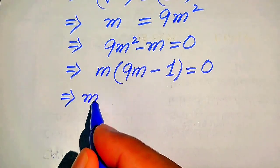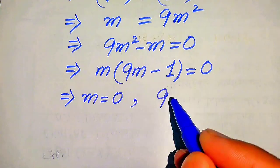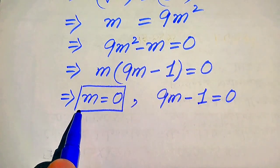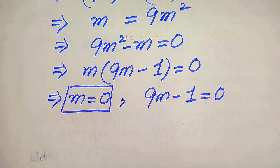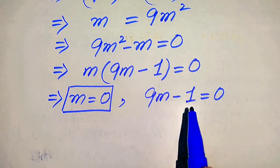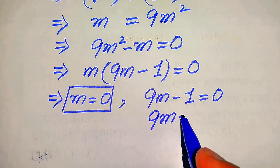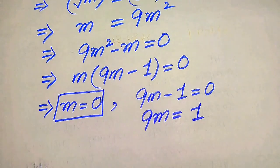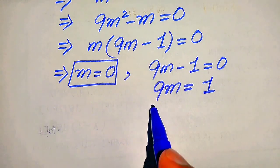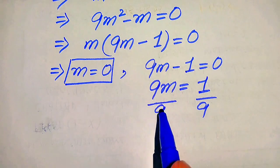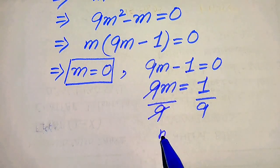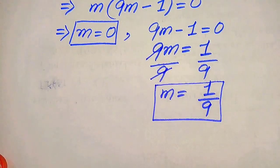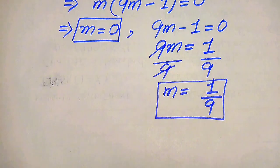We divide this into two cases. The first case gives m equals 0. The second case is 9m minus 1 equals 0. From the second case, moving minus 1 to the right hand side gives 9m equals 1. Dividing both sides by 9, this 9 cancels and we get the second value of m equals 1 over 9. Since our equation is a radical equation, we need to verify both roots.